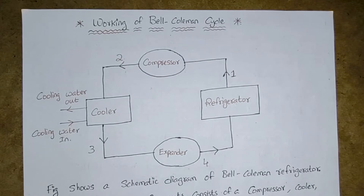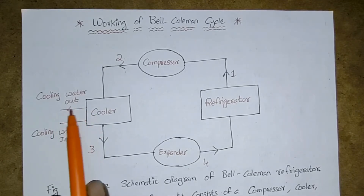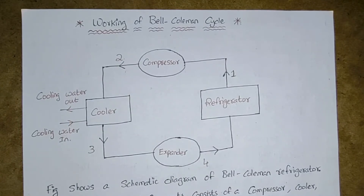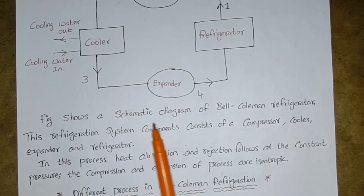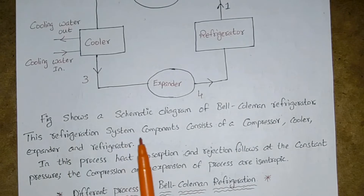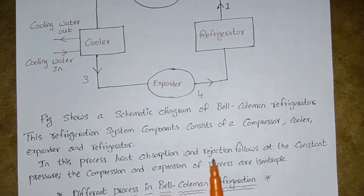So properly you have to write all these things carefully in your exam, then you will get good marks. Here in this cooler, we are showing cooling water in, seeing the direction, and cooling water out. Now we will come to know what is happening in this Bell-Coleman cycle. Each process at 1, 2, 3, 4 — what is happening — that is what we have to learn. Figure shows a schematic diagram of Bell-Coleman refrigerator. This refrigeration system consists of a compressor, cooler, expander and refrigerator. In this process, heat absorption and rejection follows at constant pressure. The compression and expansion processes are isentropic.